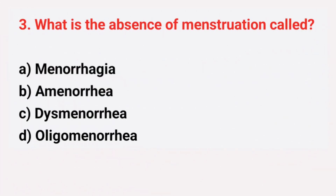Question number 3: What is the absence of menstruation called? The right answer is option B, amenorrhea.